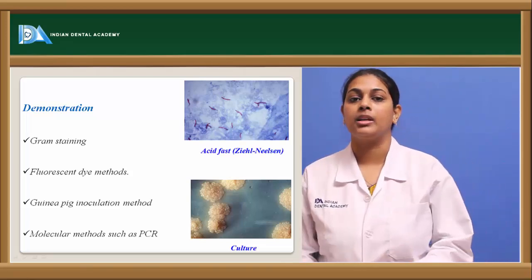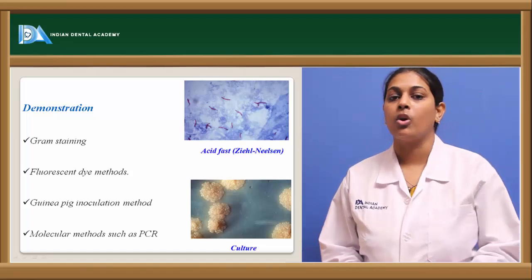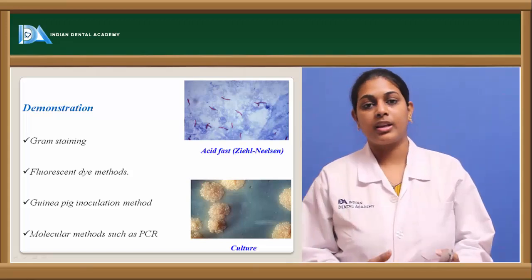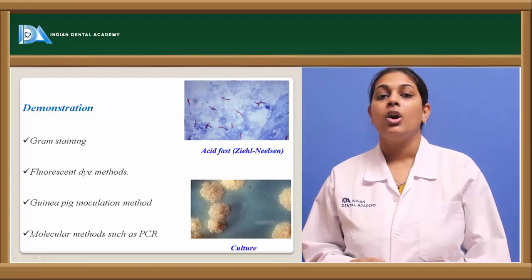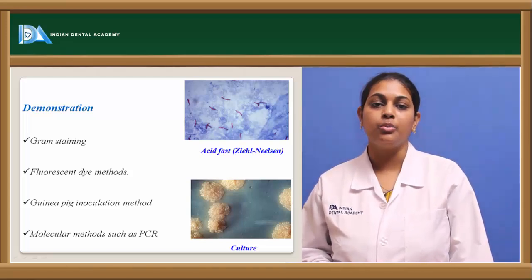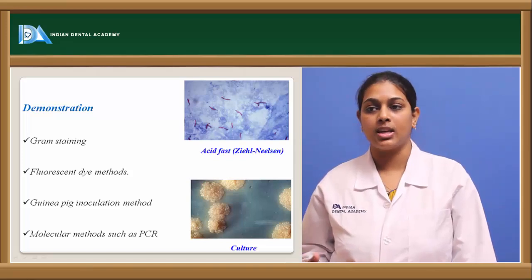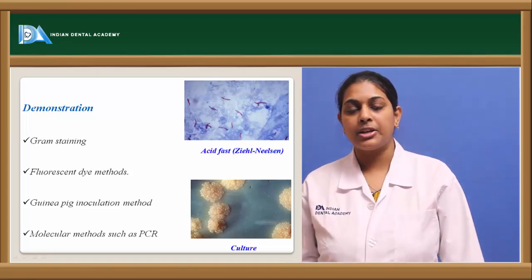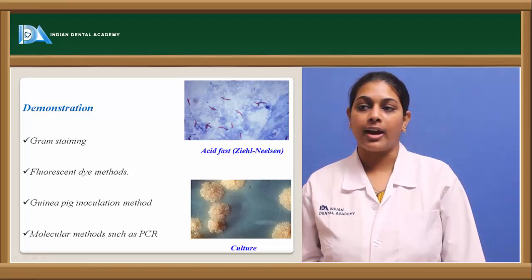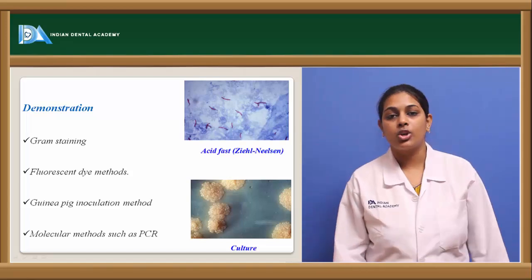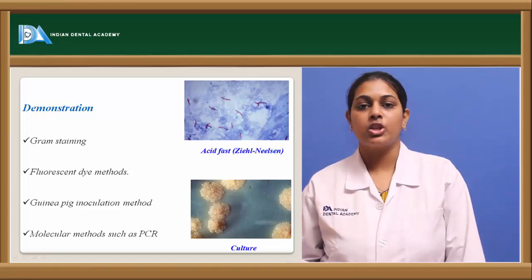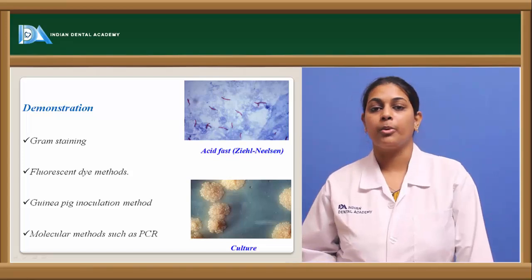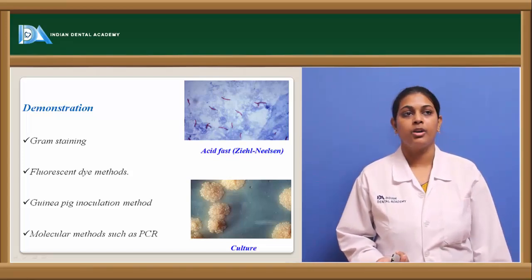Other staining methods include fluorescent dye methods using fluorescent colors. The guinea pig inoculation method involves inoculating an experimental guinea pig intradermally or intravenously with tuberculin, observing how the lesion develops. Recent methods include polymerase chain reaction (PCR) for diagnosis. Löwenstein-Jensen medium is the culture media used to identify colonies of Mycobacterium tuberculosis.